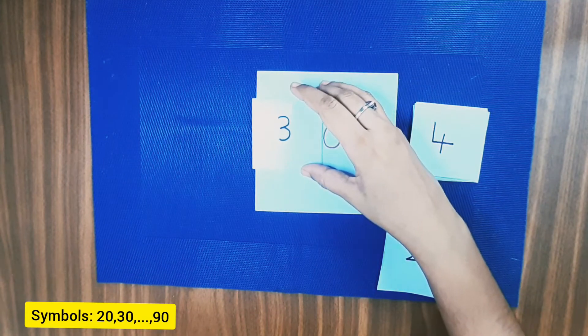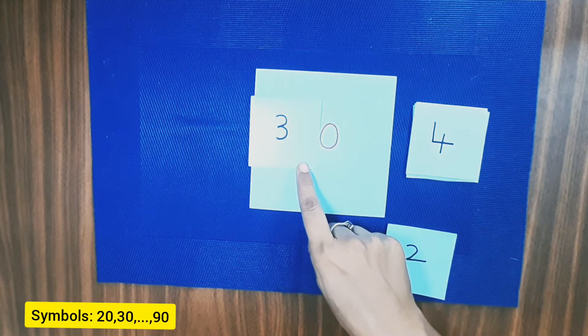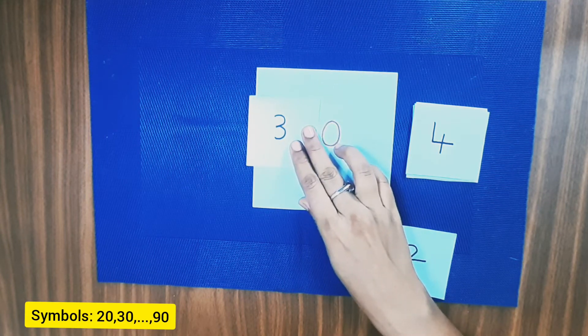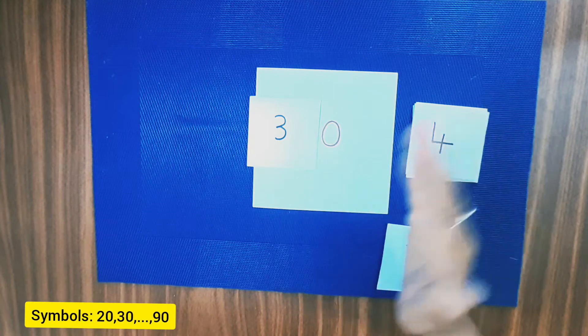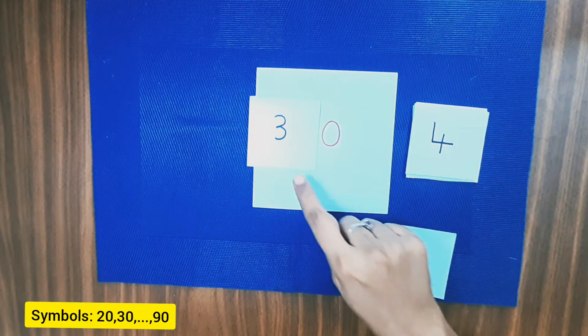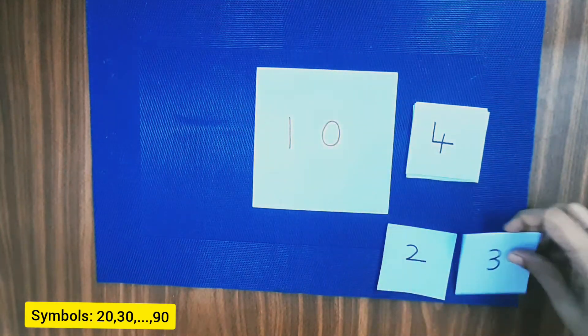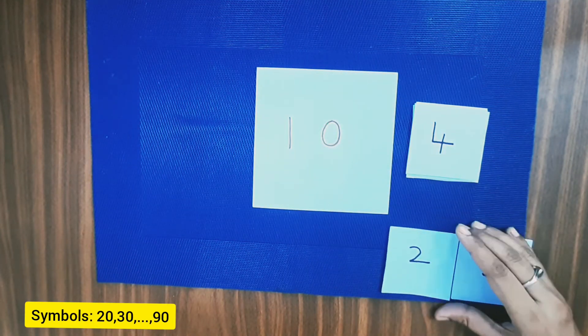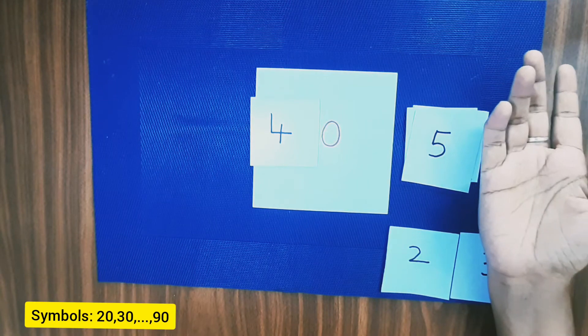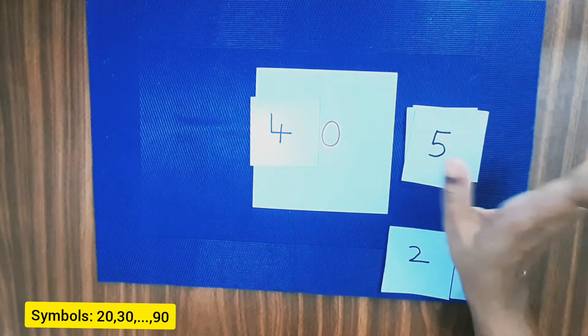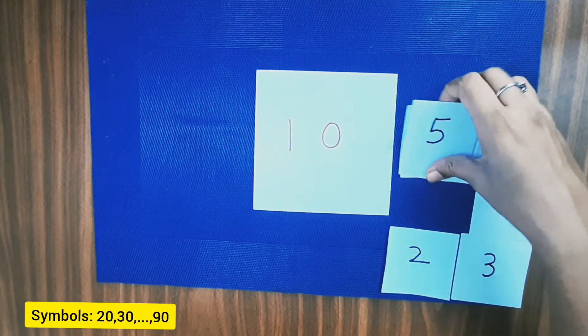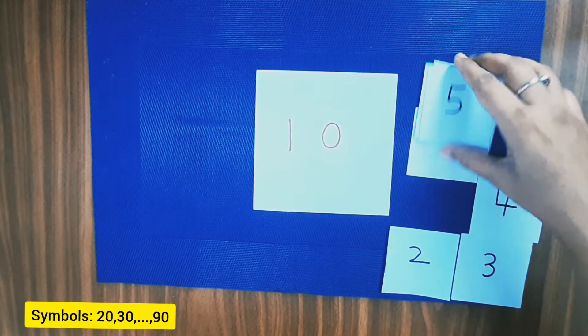Similarly you can put this one and ask the child. First you can ask the child. Because the child is already introduced to the quantities, the child may say. If the child is not able to answer, then you can say this is how 30 is written. And next card. Ask the child, what is this? If the child is able to answer, good enough. Otherwise you can say this is how 40 is written. 4-0 is 40. So you can do it till 90.